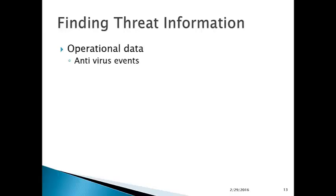Operational data includes antivirus events. Most enterprise organizations have antivirus installed on desktop machines and potentially servers, centrally managed, meaning you can run reports from the central management station about what's being found and what viruses are being cleaned. This can give you good information about potential threats — are the viruses a shotgun approach of random malware, or does it look like malware specifically designed to exploit your organization? Trends in AV can be helpful too, knowing what sorts of bad software is out there and how often it's hitting you.